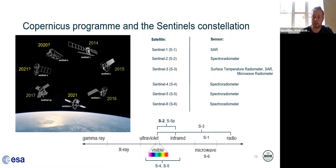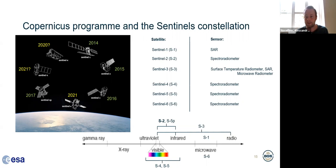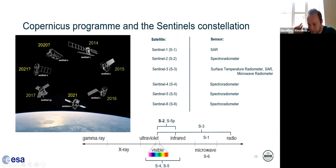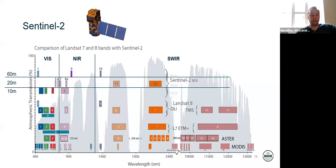Sentinel-2 is a multispectral imaging mission for land monitoring. Sentinel-3, in contrast, is multispectral but for sea analysis. Sentinel-2 is specifically for analyzing vegetation, soil, water cover, and coastal areas. It was launched in 2015 (Sentinel-2A) and then the second satellite was launched in March 2017, so there are two satellites now orbiting and acquiring data. So now forget about all the other satellites — it will just be Sentinel-2.